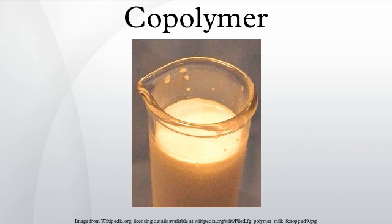Types of copolymers: since a copolymer consists of at least two types of constituent units, copolymers can be classified based on how these units are arranged along the chain. These include alternating copolymers with regular alternating A and B units, periodic copolymers with A and B units arranged in a repeating sequence, and statistical copolymers in which the sequence of monomer residues follows a statistical rule.